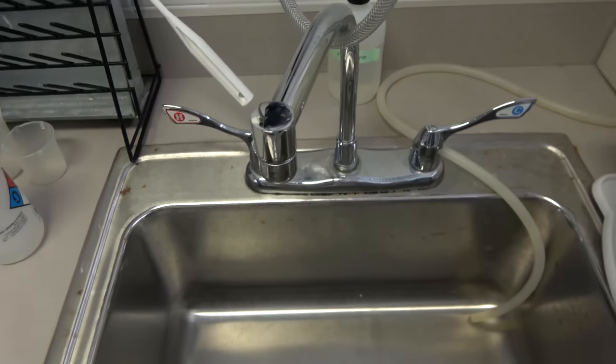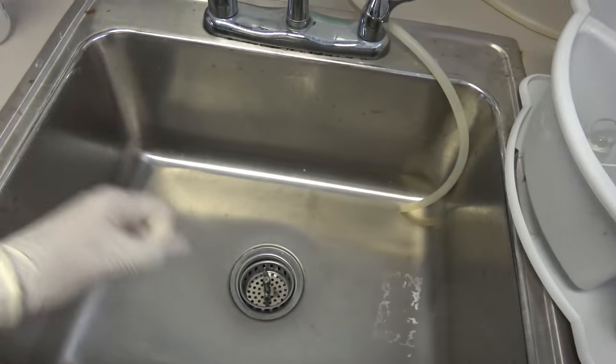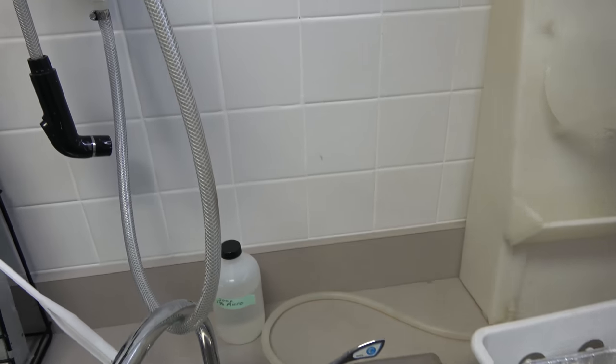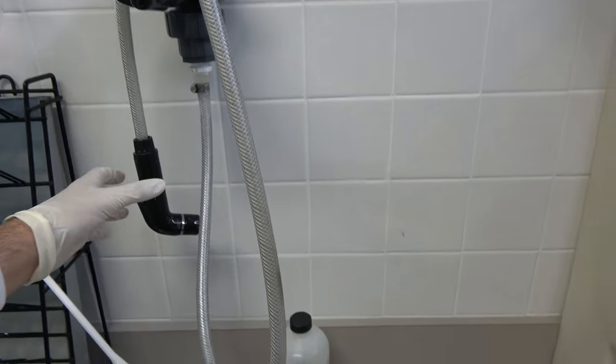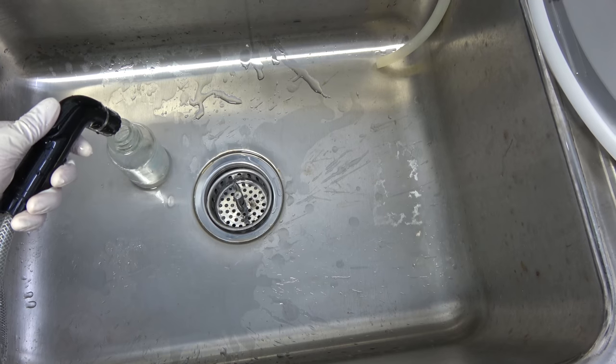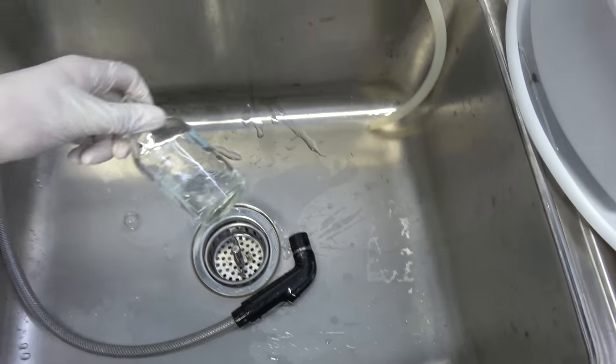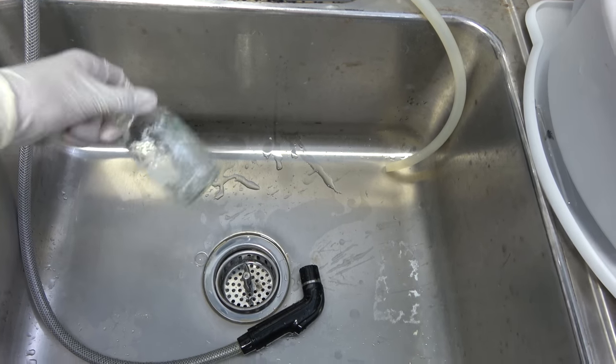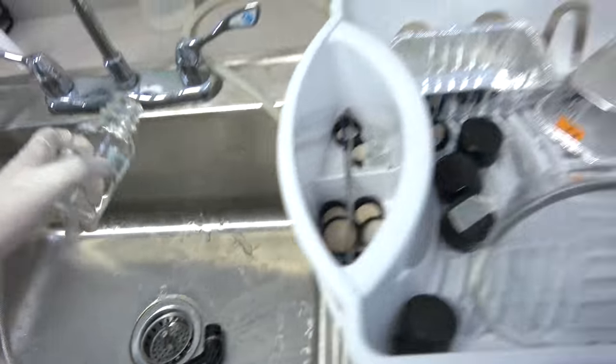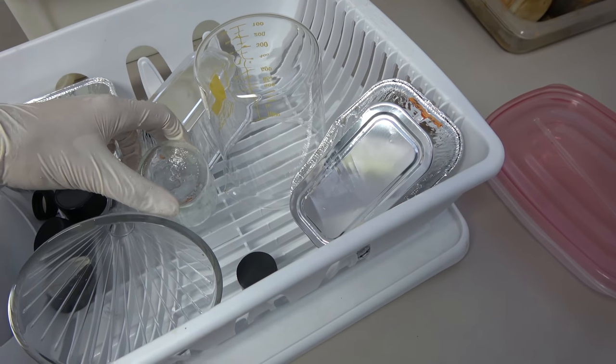Now the thing about the DI water tap is that this shit is very, very expensive. You don't just want to turn it on and be like cleaning everything like waterfall. No, you don't want to do that. So what you do instead is that you put in like just about a quarter of distilled water and then you shake it up like this and then you do that two more times. And then after that when you're done, you leave it out to dry.